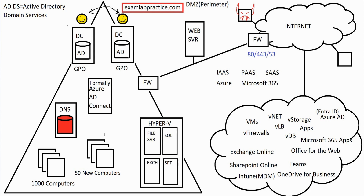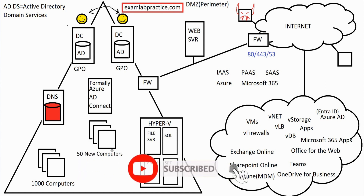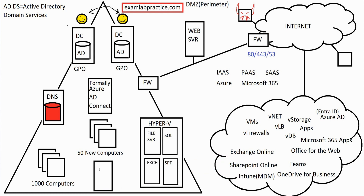The most common way that a lot of companies, especially bigger ones, handled this was with a server called Config Manager. The name has gone through a lot of changes: back in the 90s it was called SMS, in the early 2000s it became SCCM (System Center Configuration Manager), and then in late 2019 to early 2020 they changed the name to Endpoint Configuration Manager, also known as MECM — Microsoft Endpoint Configuration Manager. Most people still just call it Config Manager, though you'll still hear many people call it SCCM.